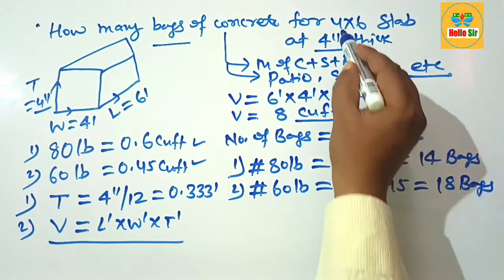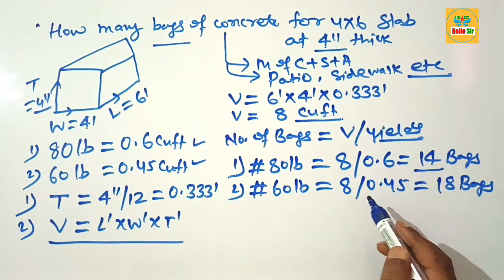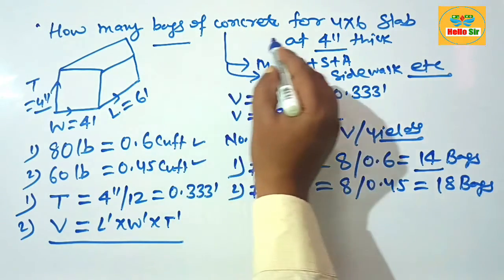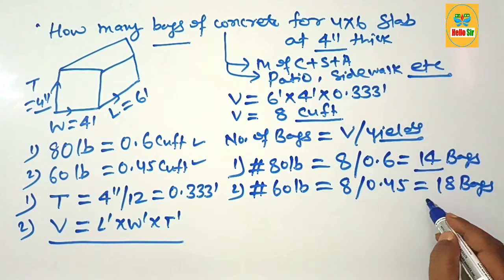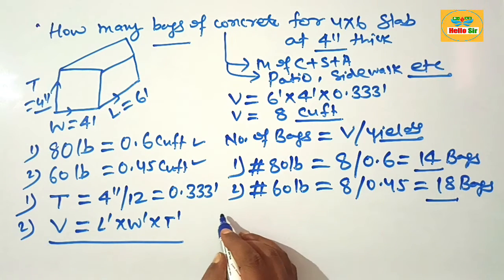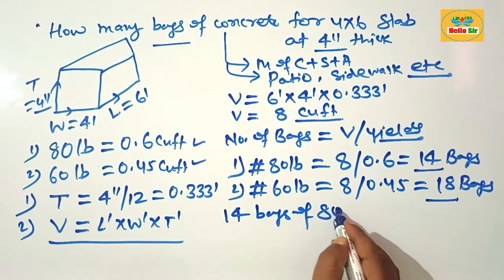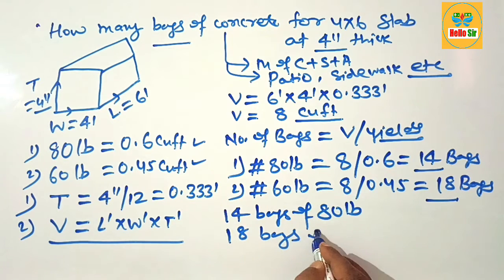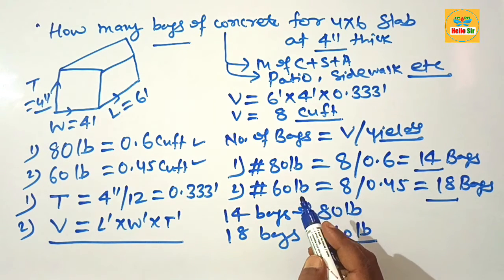In summary, for a 4 by 6 slab at 4 inches thick, you need about 14 bags of 80 pound concrete, or about 18 bags of 60 pound concrete. So you have to buy either 14 bags of 80 lb or 18 bags of 60 pound concrete for this slab.